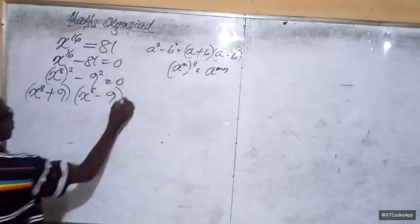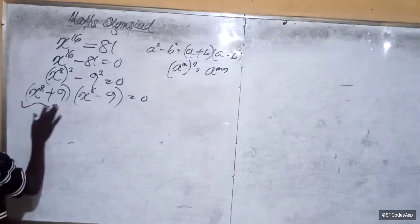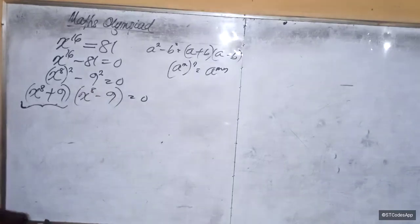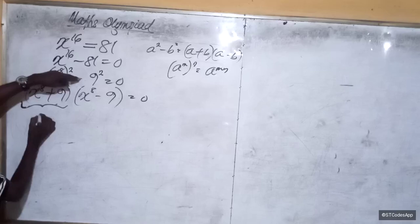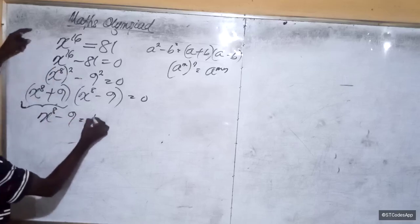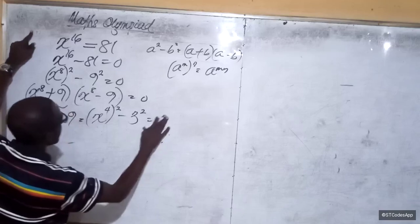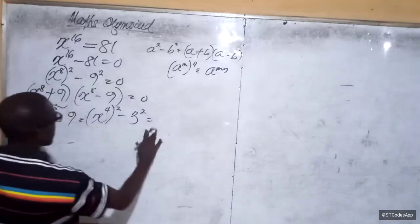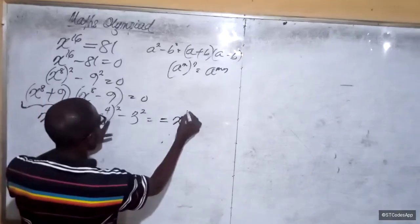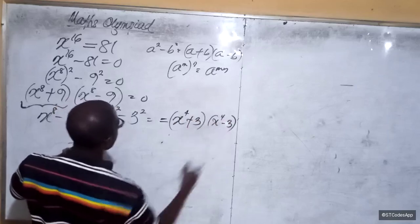That's the difference of two squares. All of this would give us zero. Let's hold this. We can hold this, but this can still be simplified because we can get another difference of two squares from here. So x raised to the power 8 minus 9 becomes x raised to the power 4 whole squared minus 3 squared. That's another difference of two squares. This becomes x raised to the power 4 plus 3 and x raised to the power 4 minus 3.